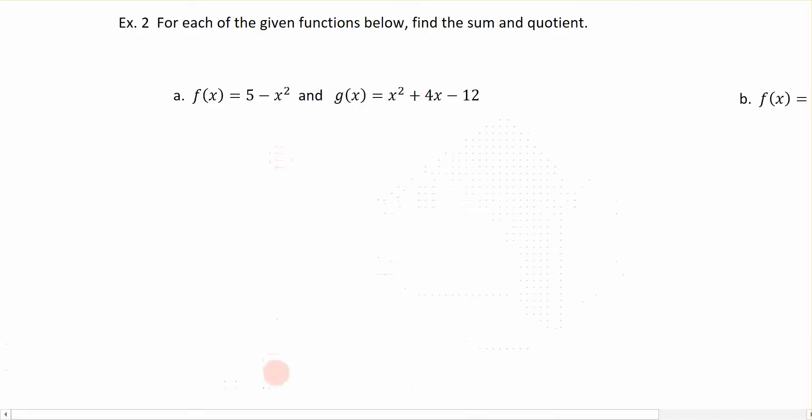And when I want to add the two functions together, so I'm going to talk about the sum. So f plus g of x, it really is just f of x plus g of x. Not real hard, because these are both polynomial functions. So I'm going to just simply take the function defined by f of x, which is 5 minus x squared, and I'm going to add that to my g of x function, which is x squared plus 4x minus 12.